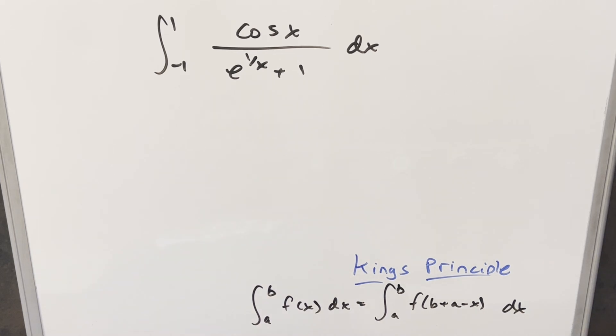Okay, I'm going to return to the integral. We've got the integral from minus 1 to 1 of cosine x over e to the 1 over x plus 1 dx.